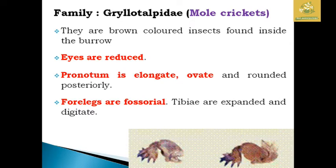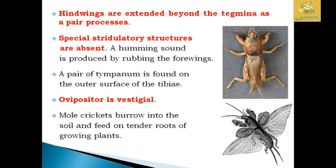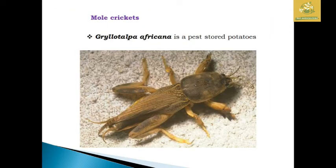The family Gryllotalpidae includes mole crickets, which are brown insects found inside burrows. The eyes are reduced and the pronotum is elongated, ovate, and rounded posteriorly. The forelegs are fossorial — the tibiae are expanded and toothed — mainly used for burrowing. The hind wings extend beyond the tegmina as a pair of processes. Sound is produced by rubbing the forewings; a pair of tympana are found outside the tibia. Mole crickets burrow into the soil and feed on tender roots of growing plants and are a serious pest in potatoes.